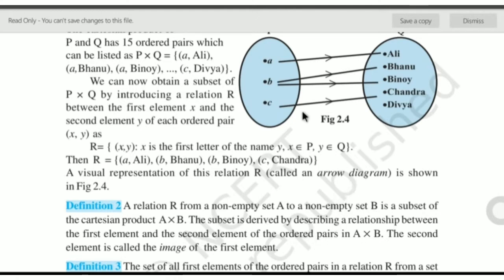The second element is called the image of the first element. The first element is called the pre-image of the second element.